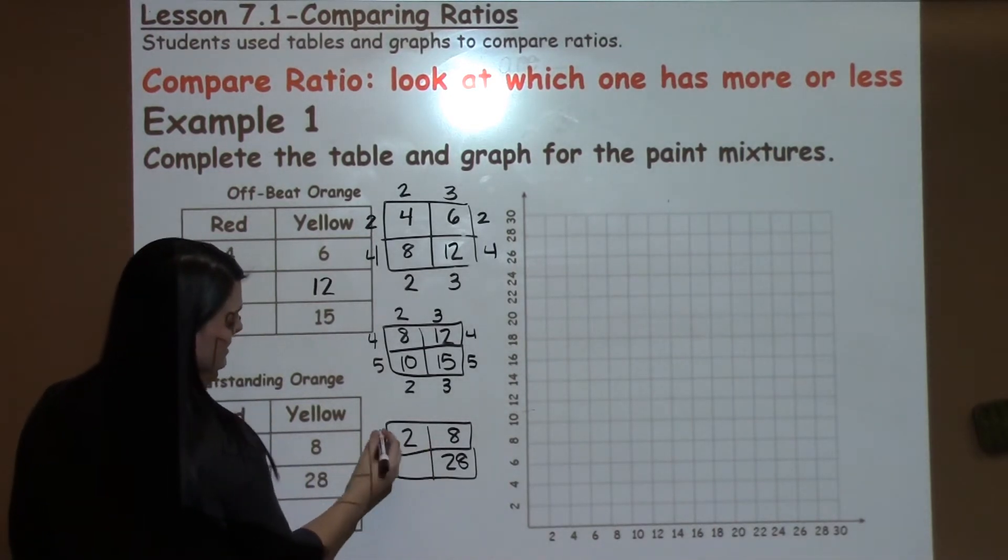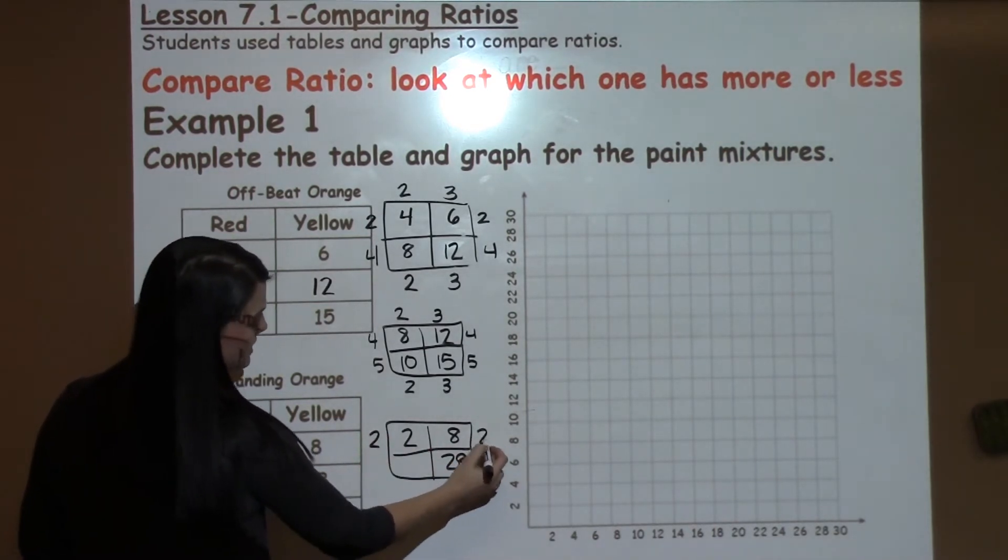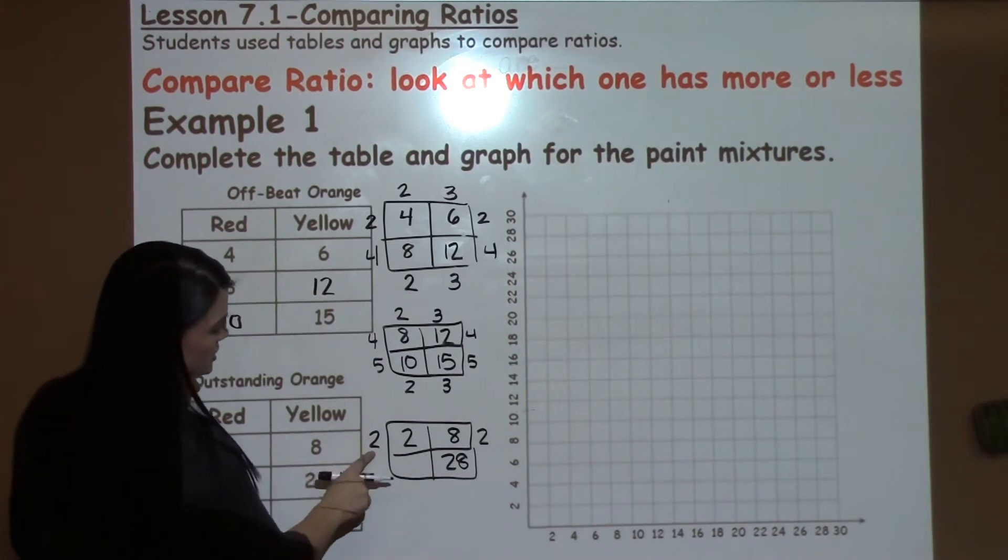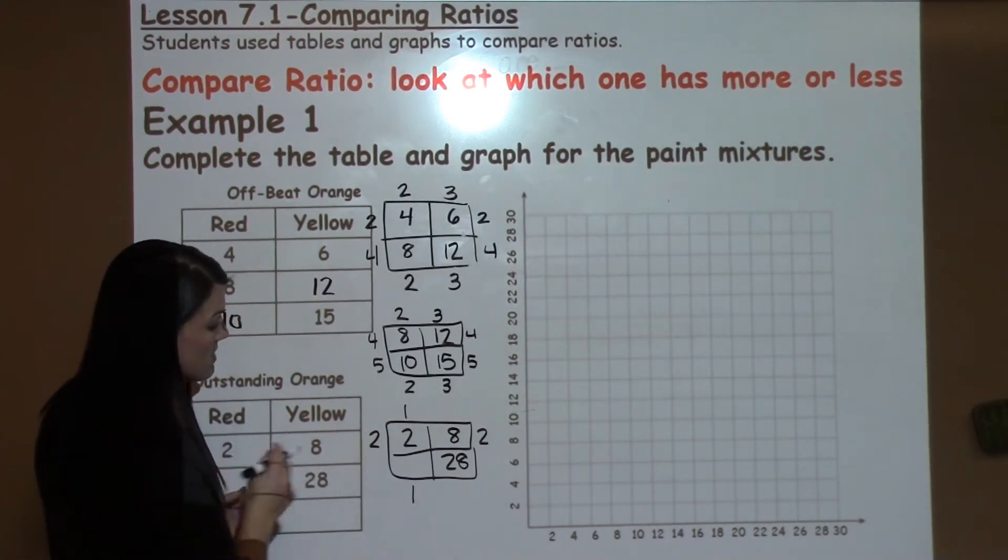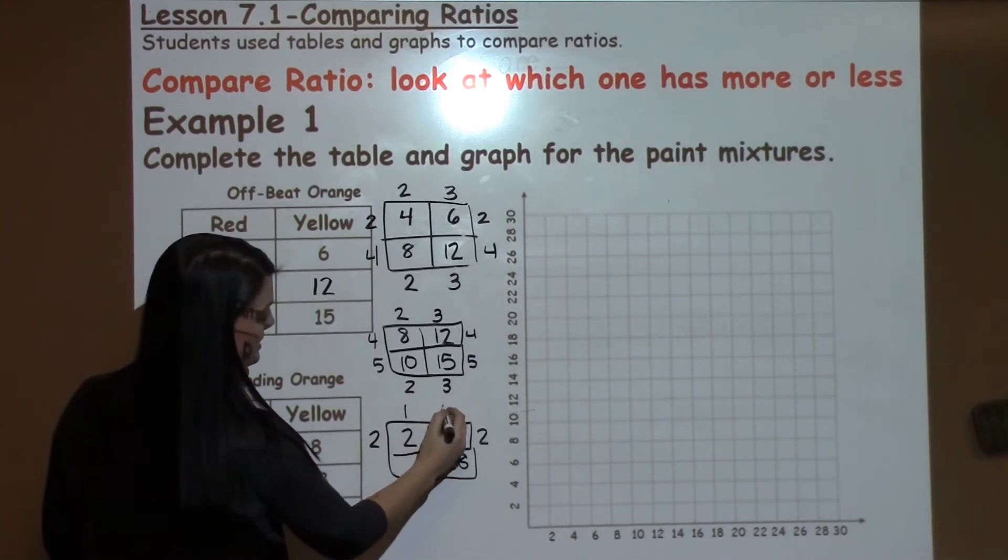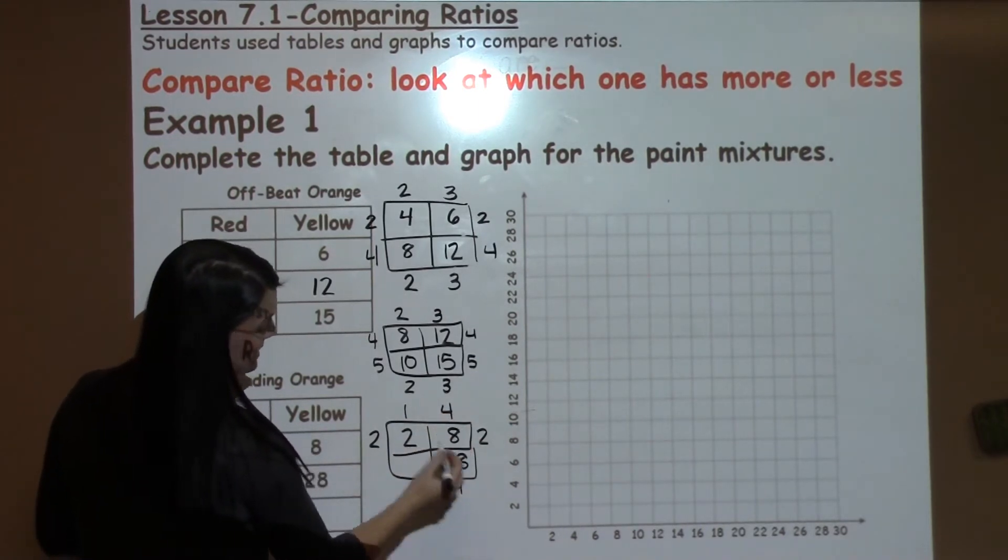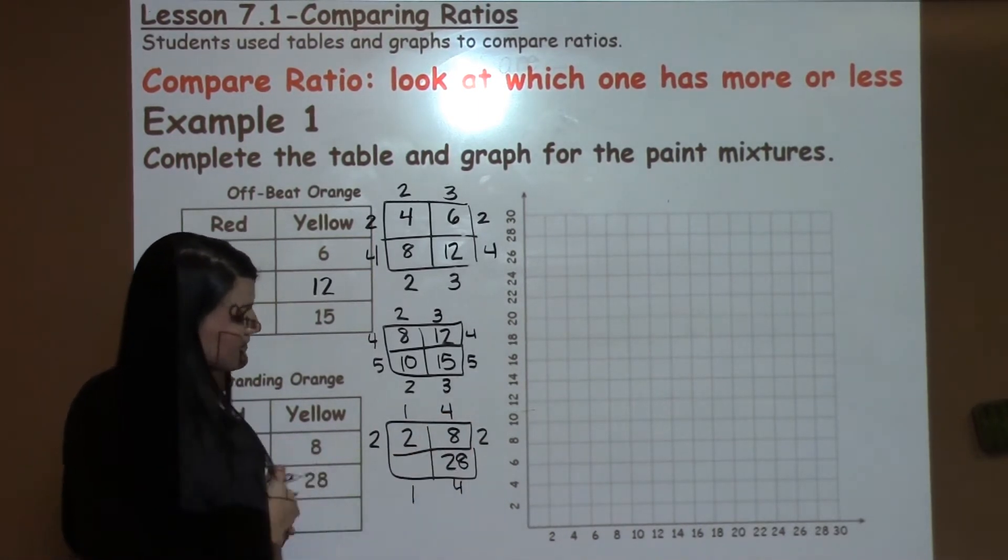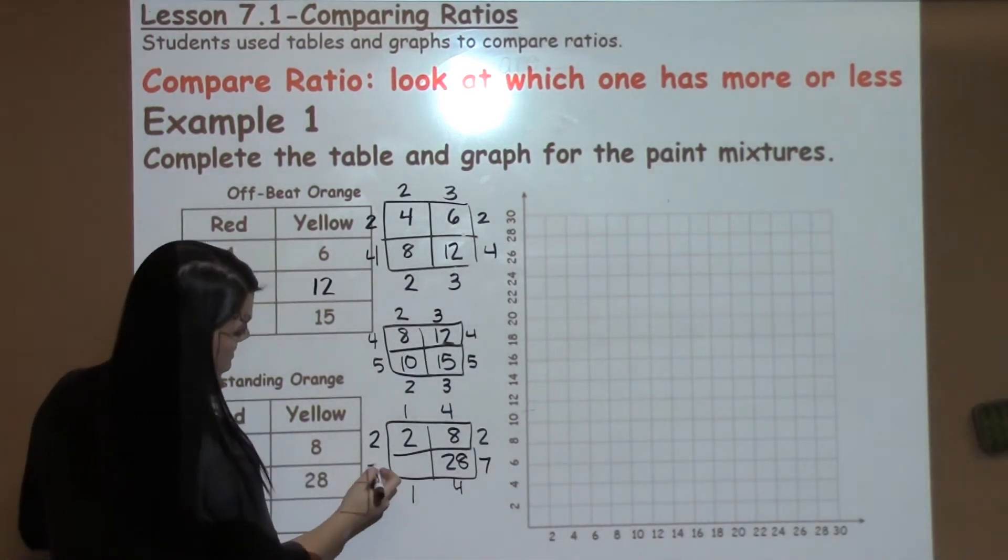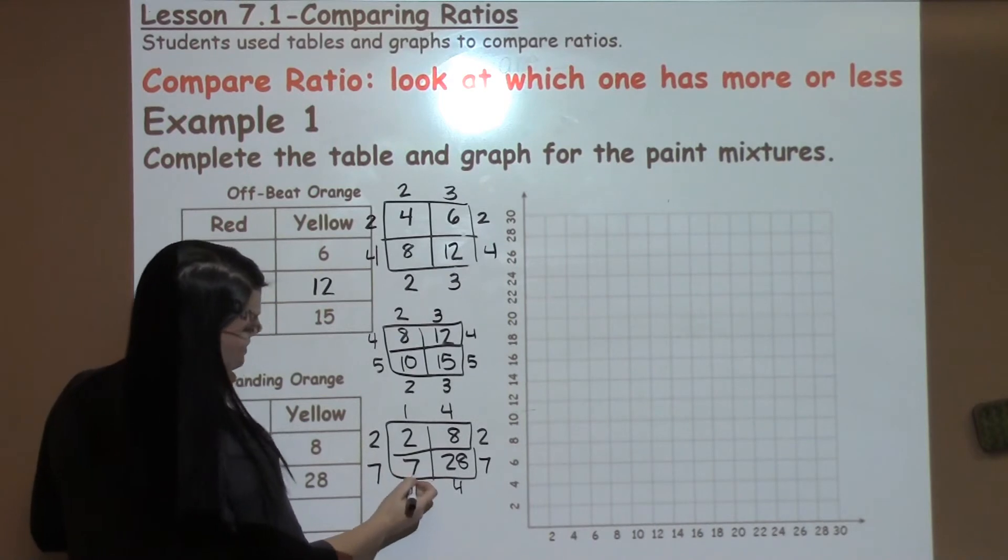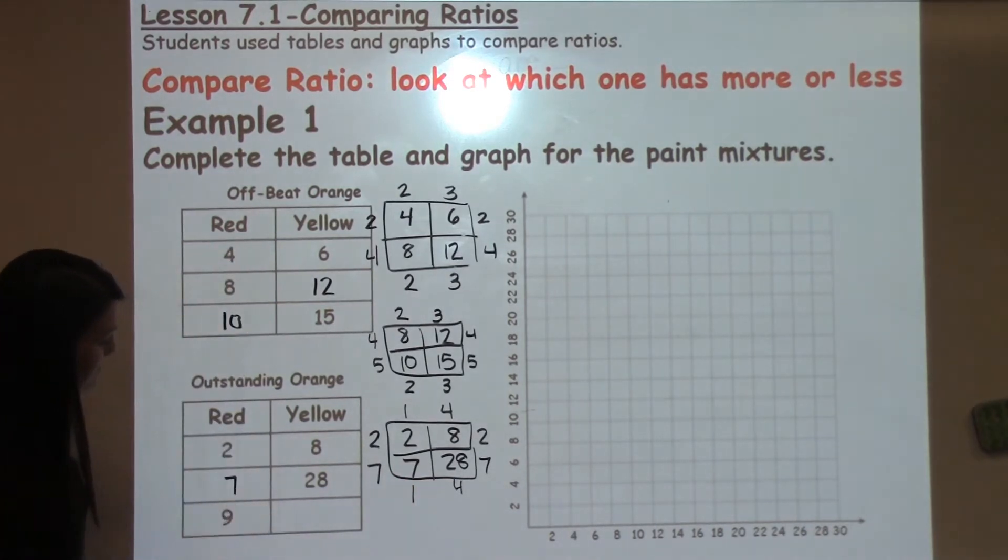So I know that 2 and 8, the only number they have in common is 2. So I'm going to put those off to the side. 2 times what gives me 2? That would be 1, so it's going to come down below. 2 times what gives me 8? That would be 4, so it's going to come down below. 4 times what gives me 28? That would be 7, so it shoots across. 7 times 1 is 7, so I know that's my missing number here.